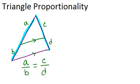This is useful because if you didn't know one of those lengths but you knew the other three, you could use cross multiplication in order to solve for the missing length.